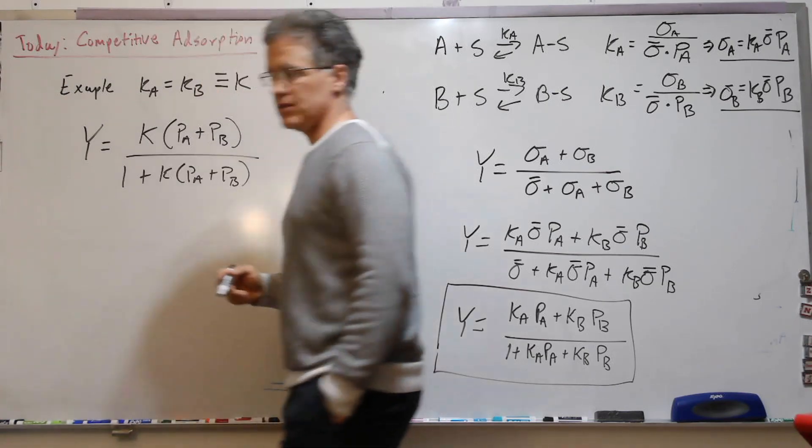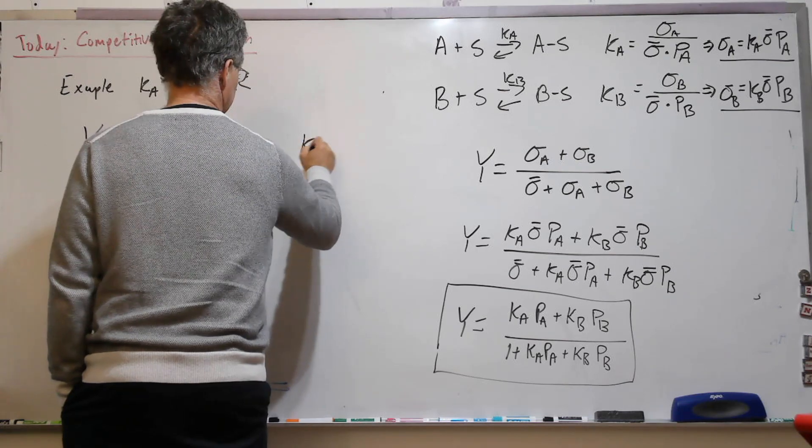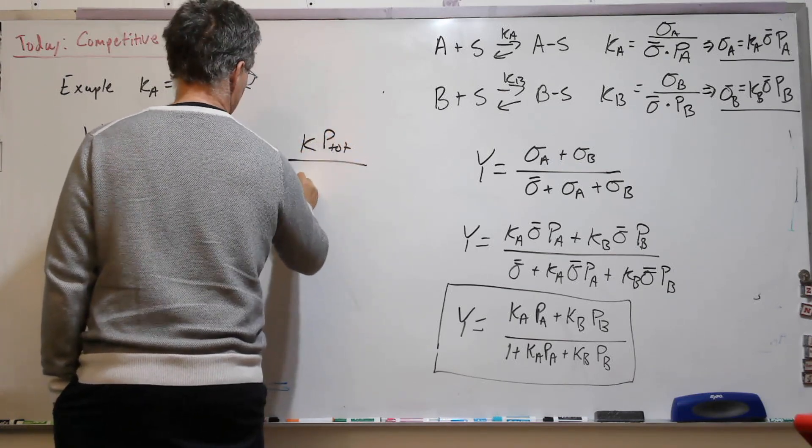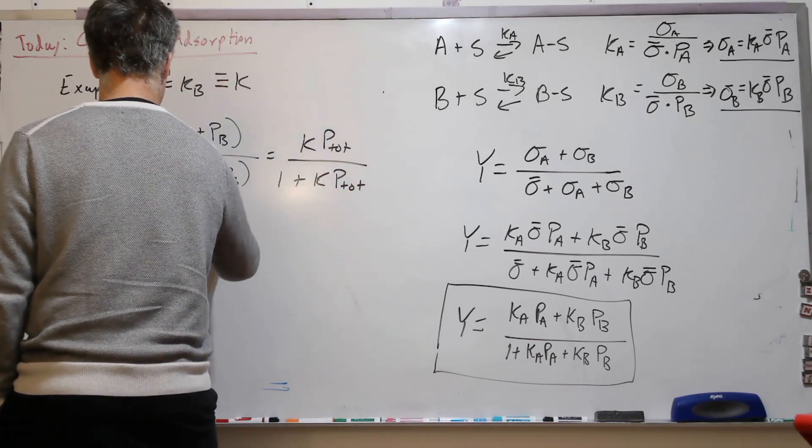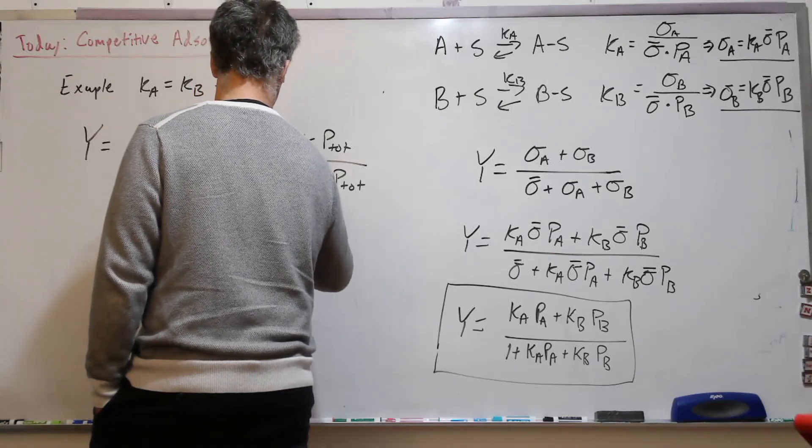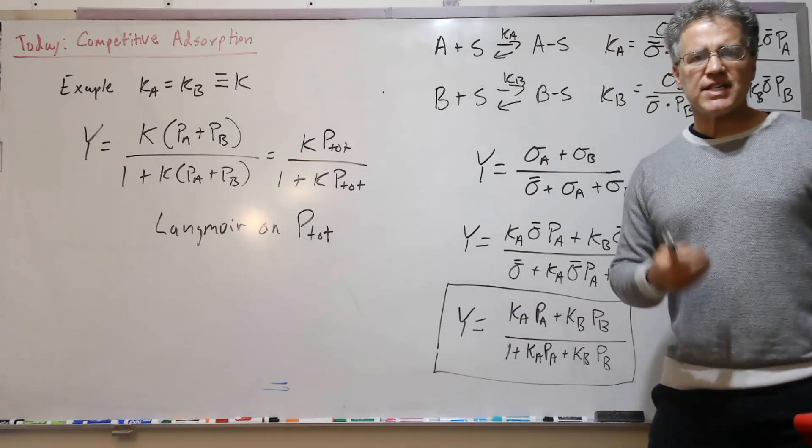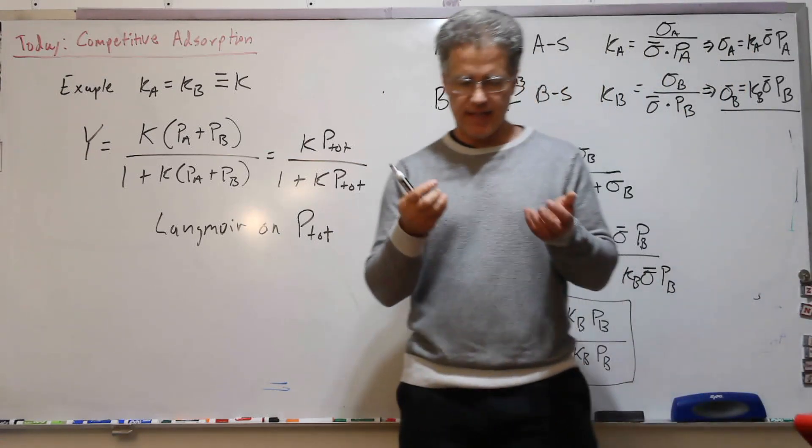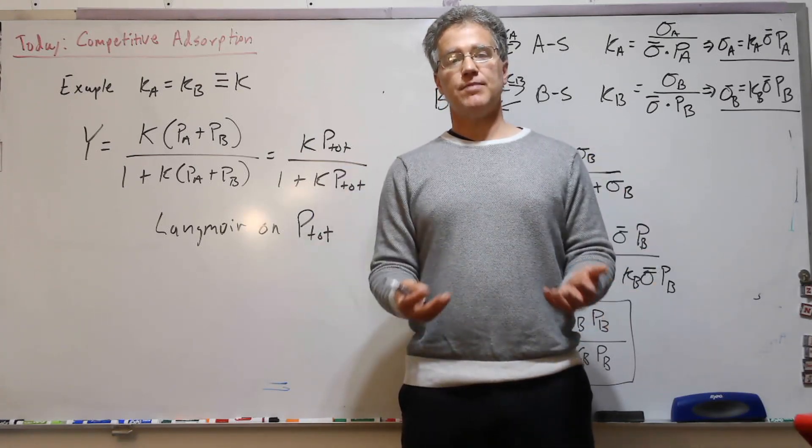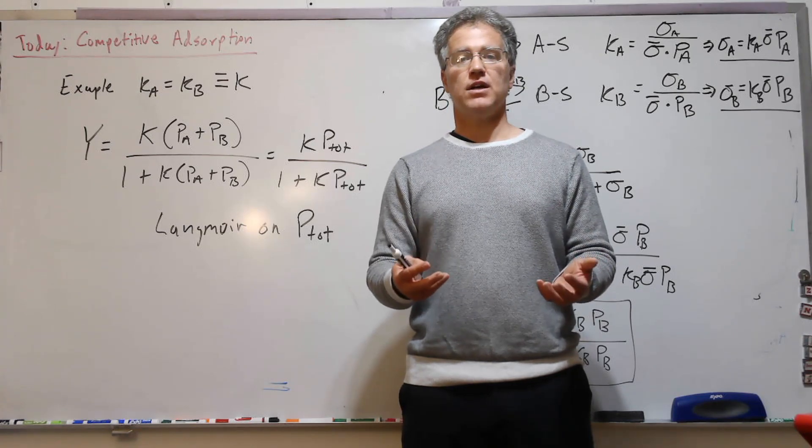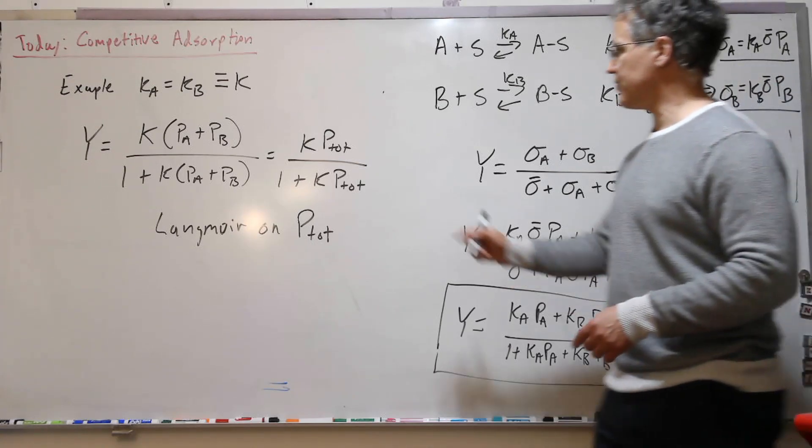So just substituting K in each of these places and distributing it out. Now Dalton's law of partial pressures, this is the total pressure, and we can see it's Langmuir on P total. And that makes some sense because if we're saying that there's no difference between A and B, then the identity of A and B don't matter. All that matters is just how many particles of either A or B are in there. And then it just becomes basically a Langmuir problem as we recover right here.